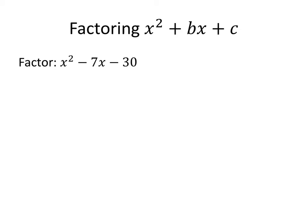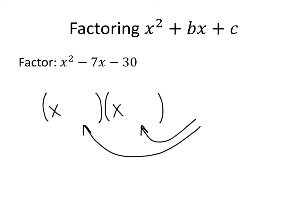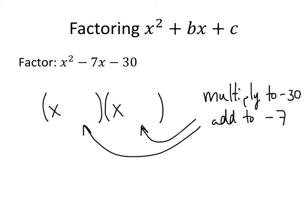When we factor quadratics — especially ones with a leading coefficient of 1 on the x squared term — we think about it slightly differently. There's no common factor to pull out, but since the coefficient of x squared is 1, it's going to factor as something like x plus or minus some number, times x plus or minus some number. The two numbers must multiply to give the constant term and add to give the coefficient of x.